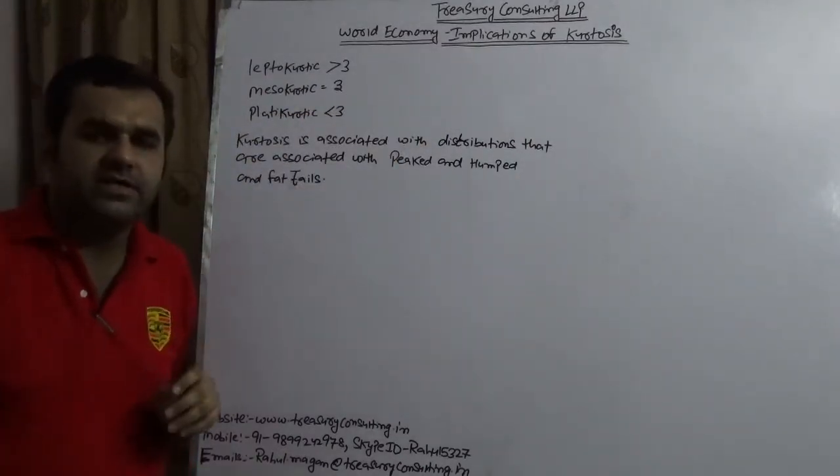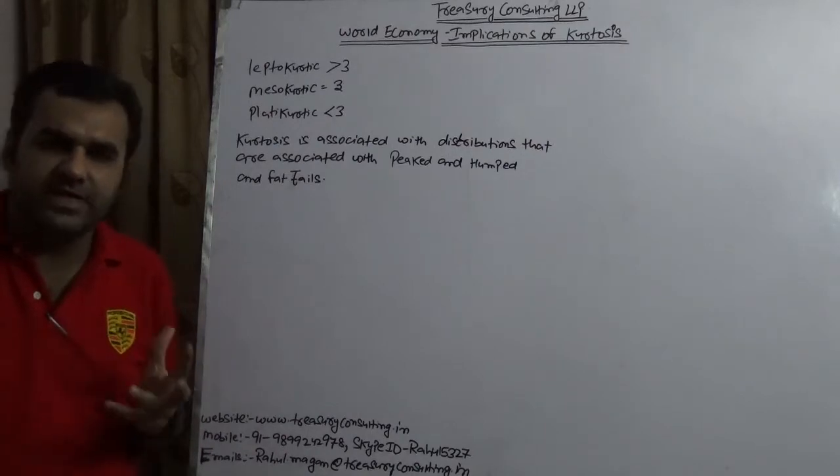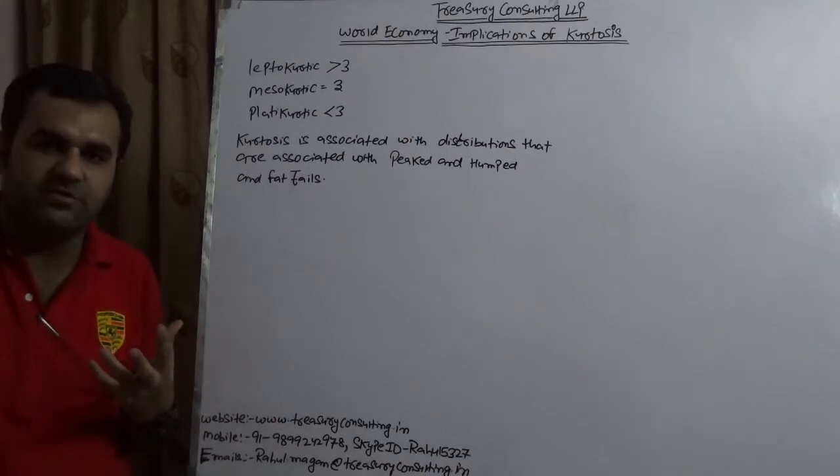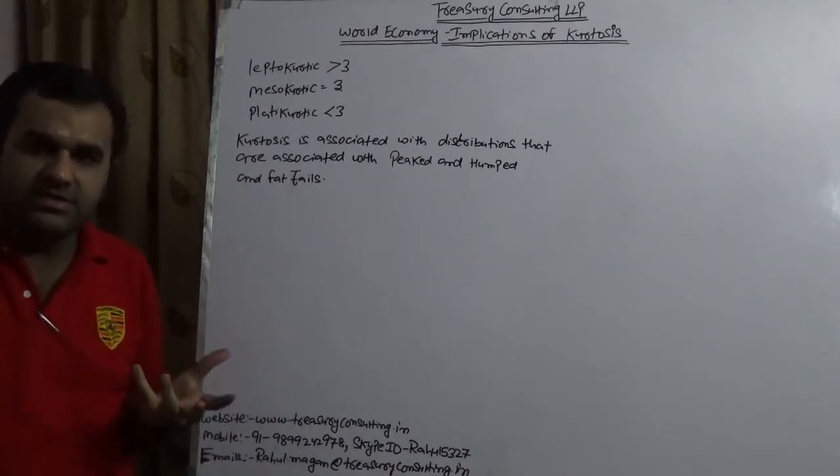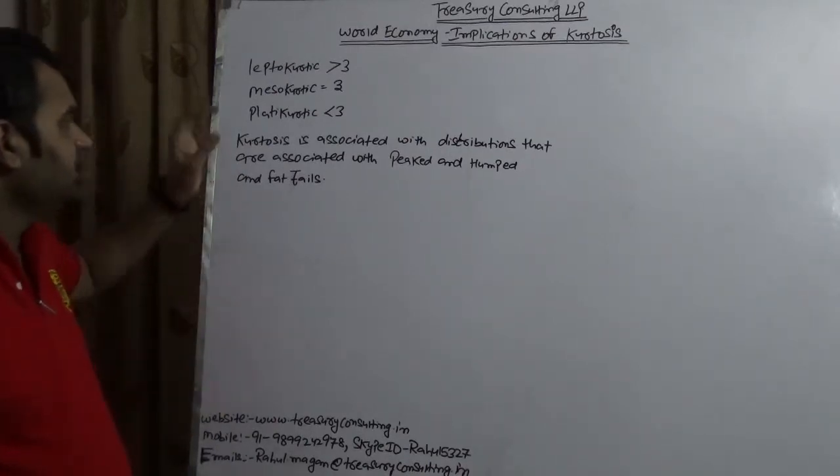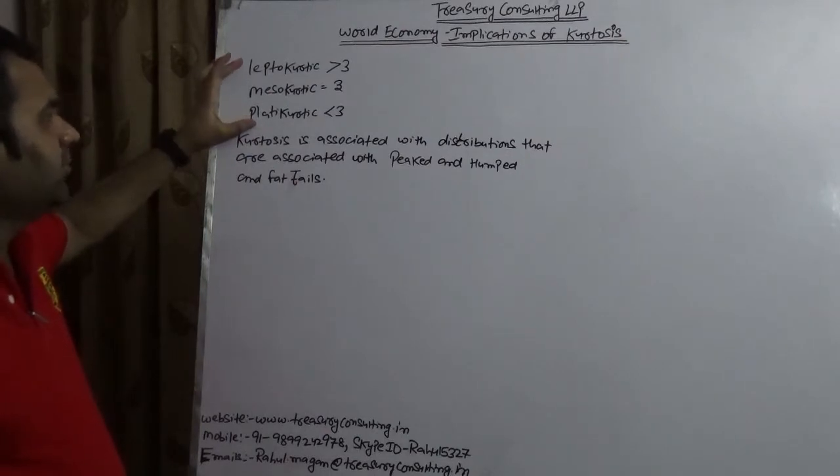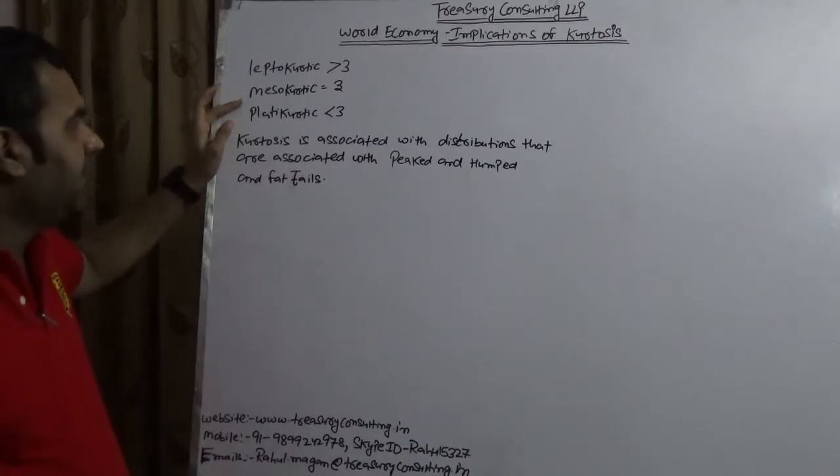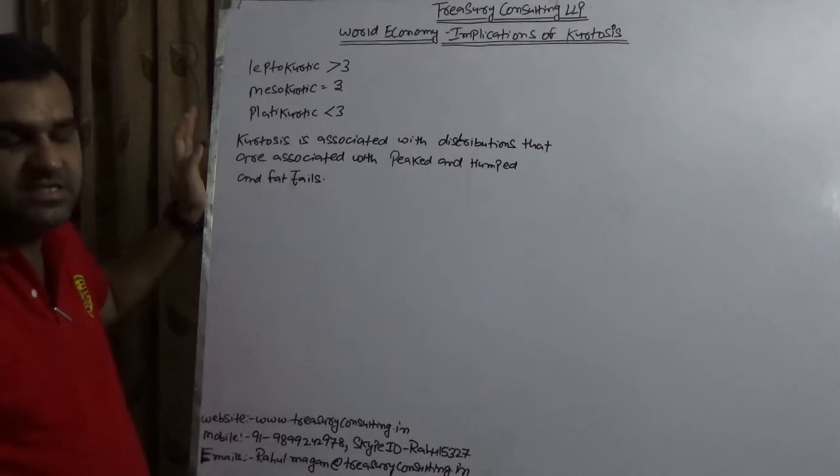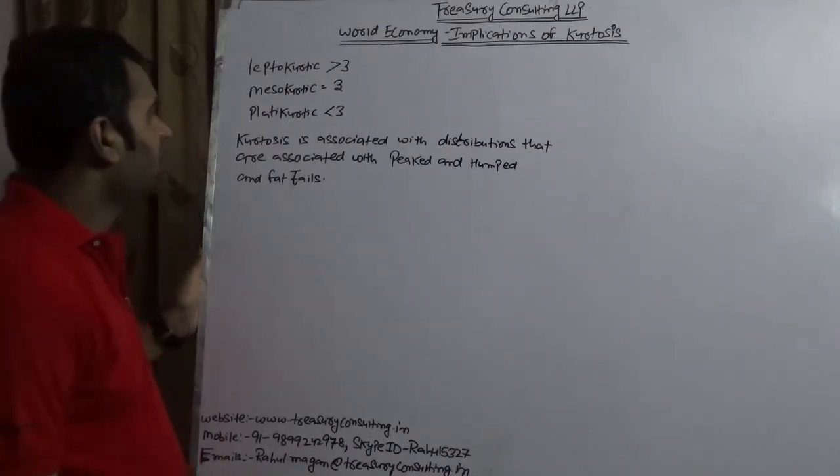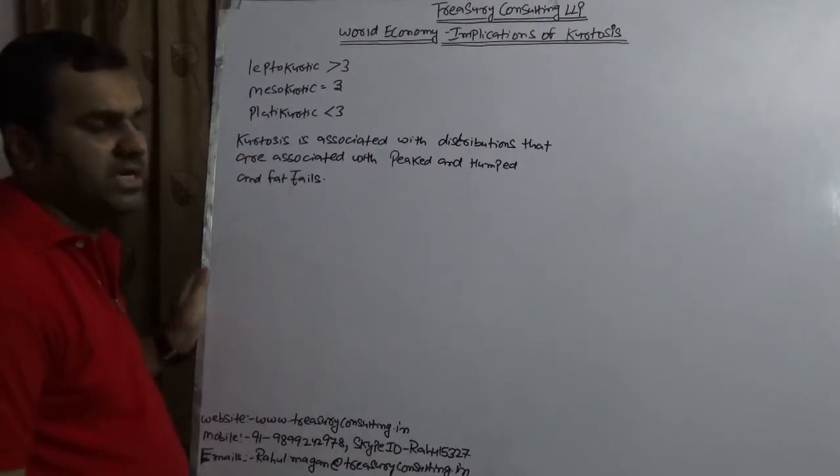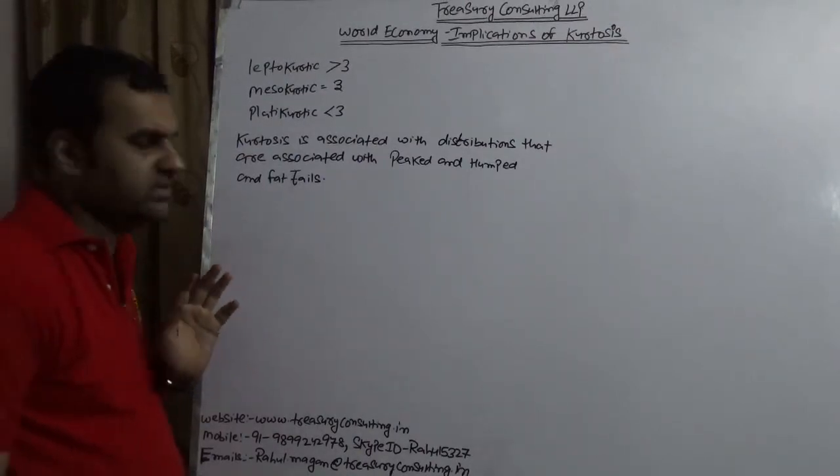As you will understand, kurtosis is a very important measure in statistics, but unfortunately in countries like India it has been read only for the sake of passing papers. People don't take it seriously. Kurtosis is divided into three parts: Leptokurtic, Mesokurtic, and Platykurtic. Leptokurtic is greater than 3, Mesokurtic is equal to 3, and Platykurtic is less than 3. We are not talking about Mesokurtic and Platykurtic here. We are talking about something which is Leptokurtic, which is very interesting to understand.